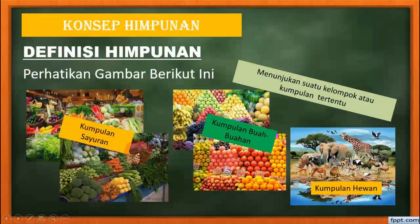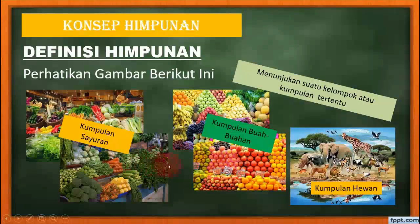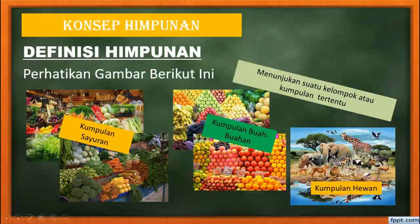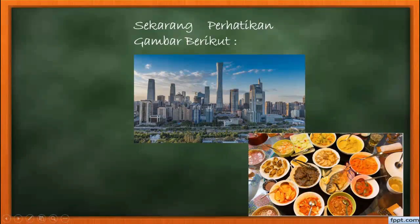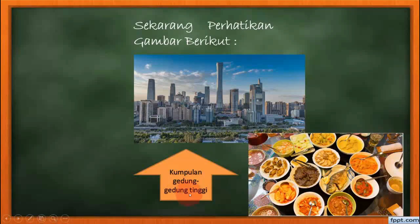Apa maksud dengan definisi himpunan dan gambar-gambar ini? Suatu himpunan atau kumpulan menunjukkan suatu kumpulan benda-benda atau objek-objek yang ada, yang dapat terukur dan terdefinisi. Berikutnya kita lihat gambar yang satunya. Ini ada sebuah gedung yang beragam ketinggiannya, kemudian ada makanan berbagai jenis yang enak-enak. Yang pertama adalah kumpulan gedung-gedung tinggi.